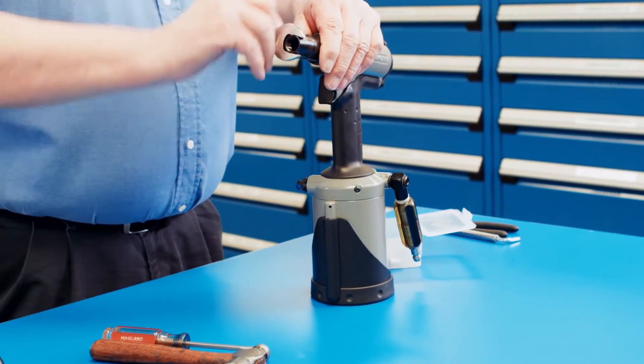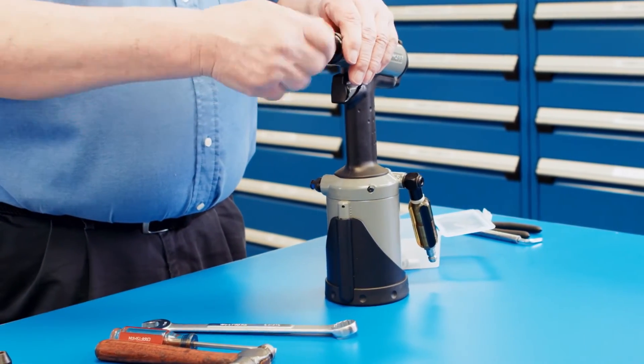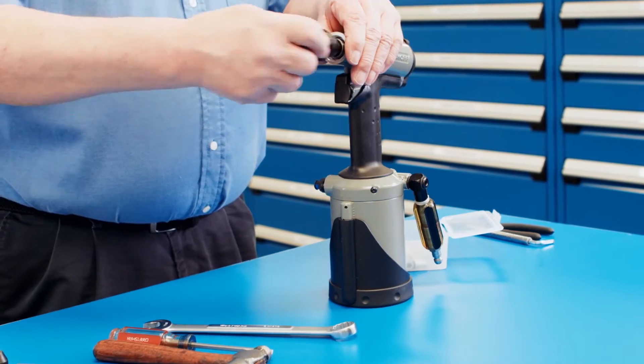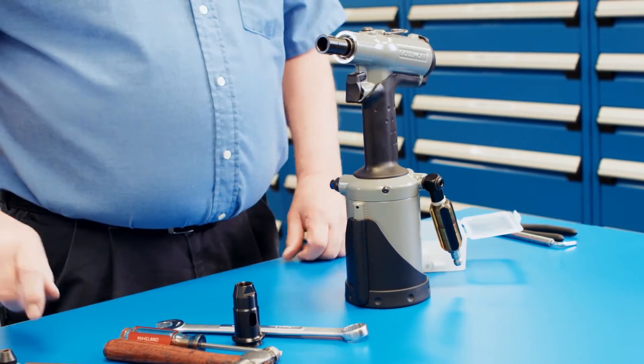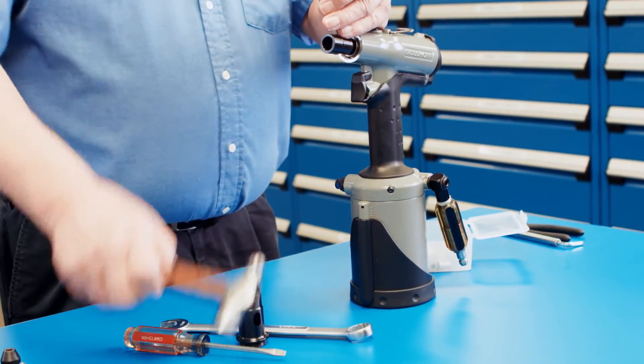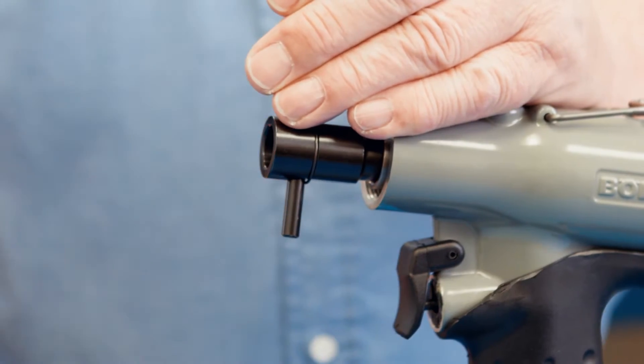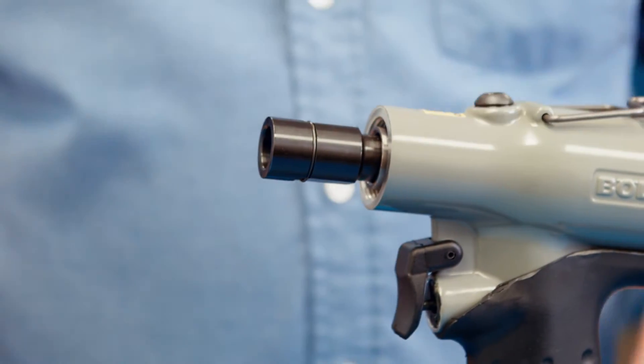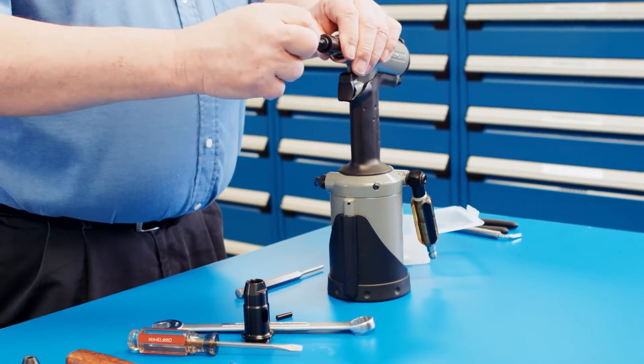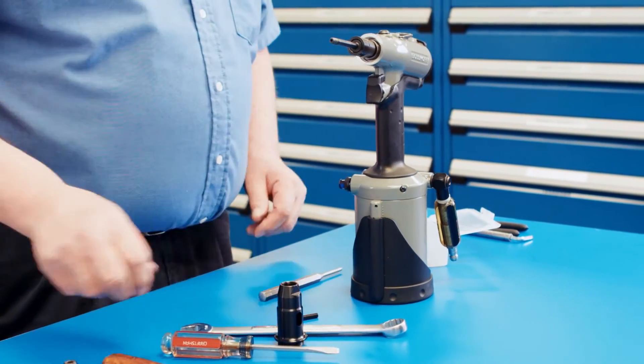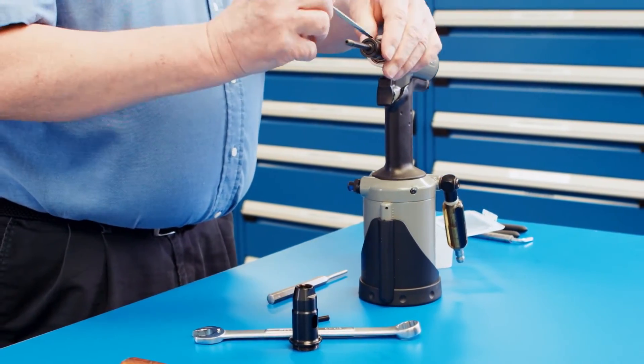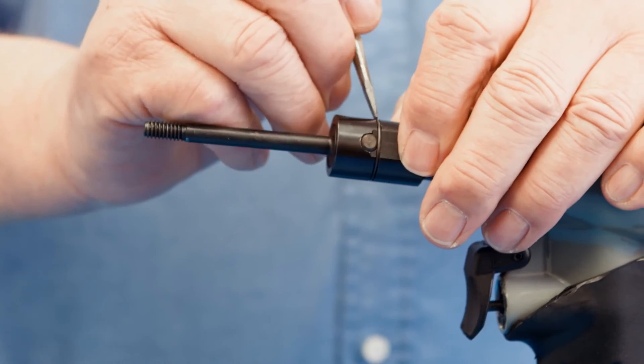First, remove the nose piece. Second, remove the mandrel retaining pin. Then install the mandrel in correlation with the fastener you're using. Reinstall the mandrel retaining pin.